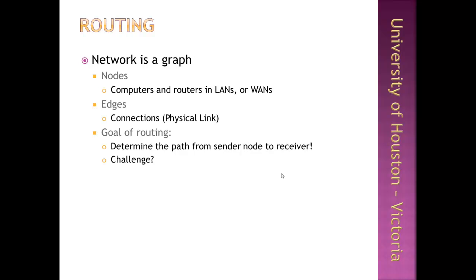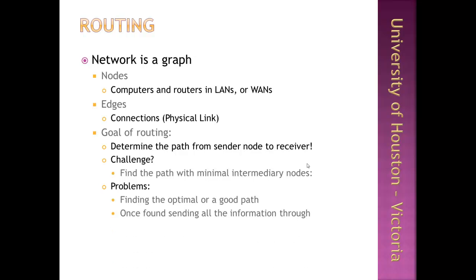An example of a route is, in a circular network, a wire connection that connects each computer to the next computer in a round-robin clock. There are two core issues at the heart of finding a route: first, finding an optimal or good path in the routing graph, which can be difficult with changing network loads or topologies; and second, once a route is established, getting information packets through intermediary routers to the receiver efficiently.